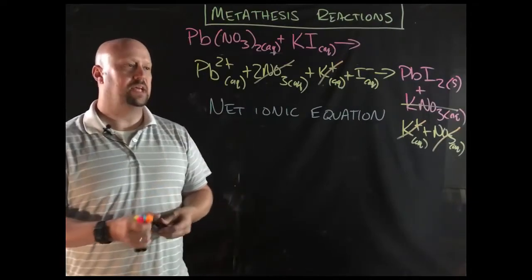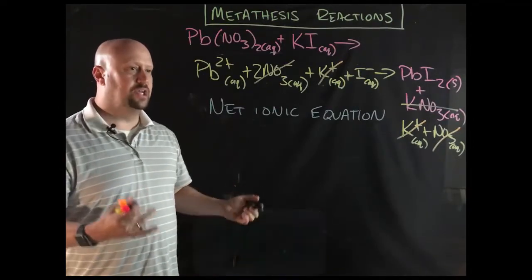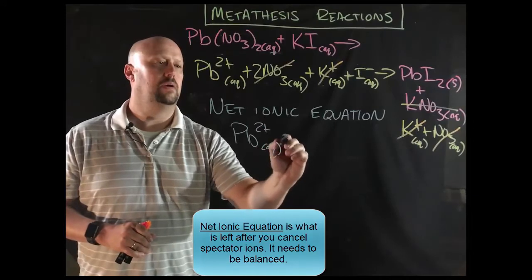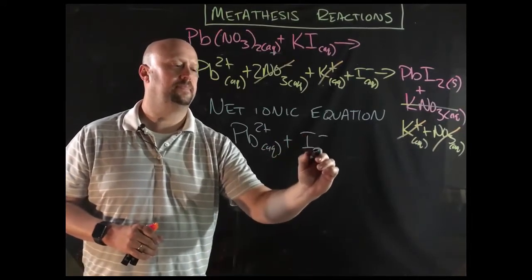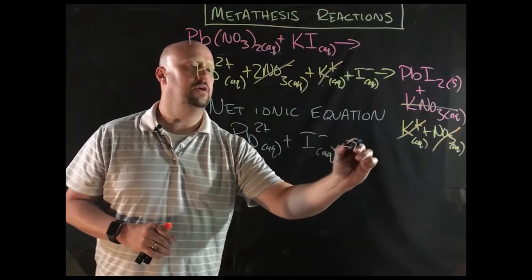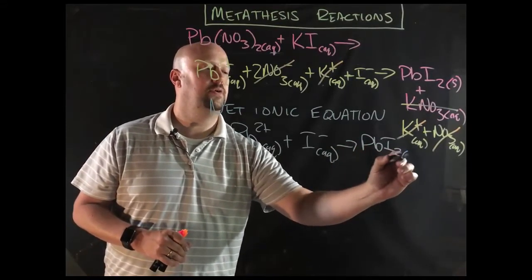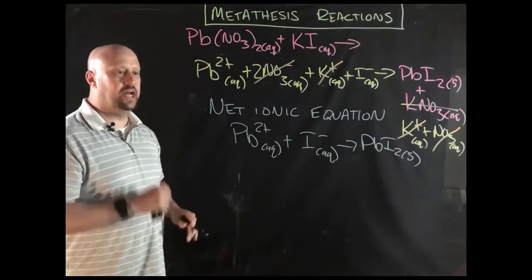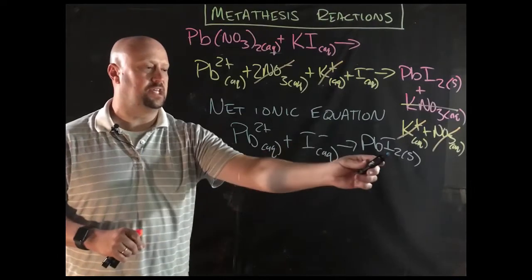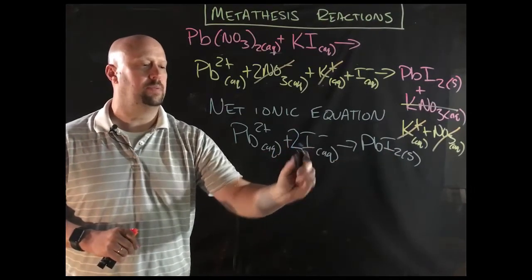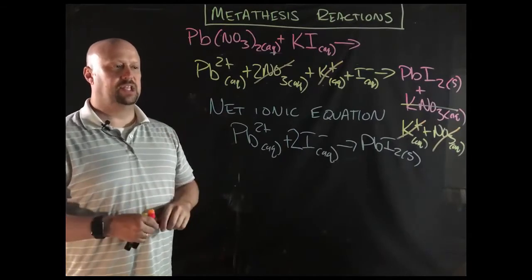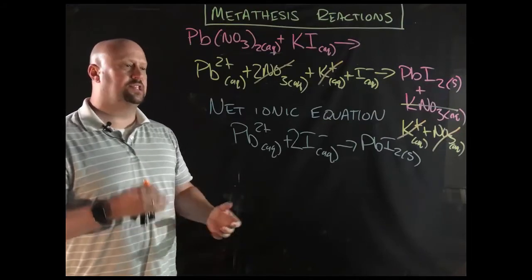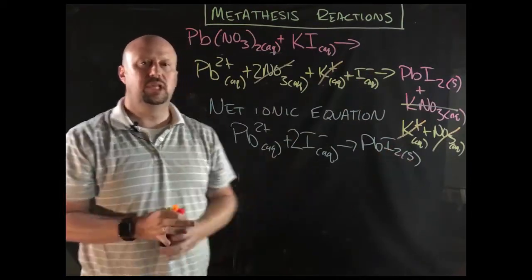Well, what's left is our net ionic equation. Our net ionic equation in this case is lead 2+ plus iodide aqueous yields my solid lead 2 iodide. And I'm not done. Once you get to your net ionic equation, you then need to balance it. In this case, that's real simple. I've got 2 over here. So I'm going to put a 2 in front of that. That is now my balanced net ionic equation. Net ionic equation is actually really useful because what this essentially does for us is it distills down all of this to this really simple equation.